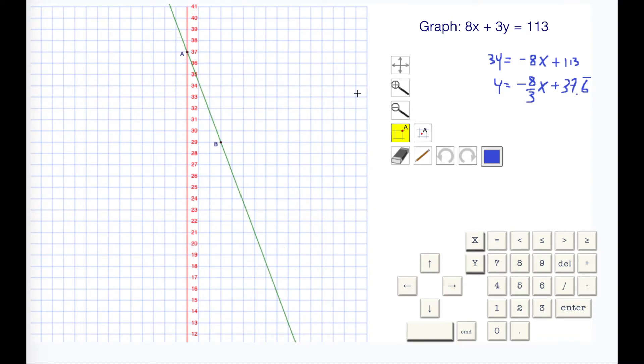It's 37.6 repeating. I'm going to go to my unsnap, grab the line and I'm going to lift that up. This is like 37.5. Here's 37.6.